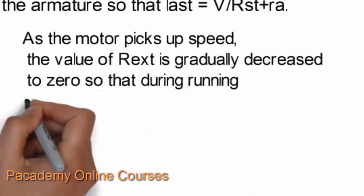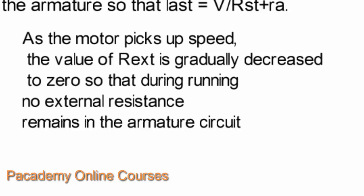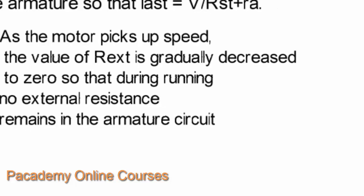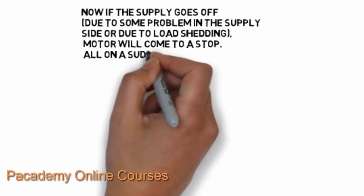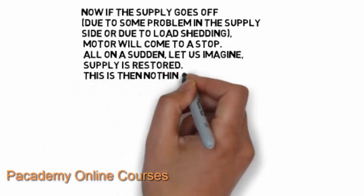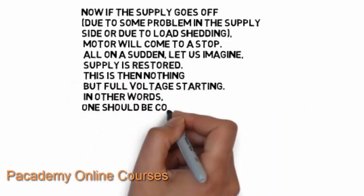The armature current equals the supply voltage divided by (R_ST plus R_A). As the motor picks up speed, the value of R_EXT is decreased to zero so that no external resistance remains in the circuit. Once the motor picks up speed, back EMF develops and counters the supply voltage, bringing the armature current back to normal. Until the motor reaches speed, resistance is added in series with the armature to control the armature current.